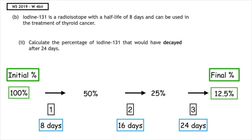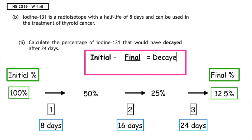However, this is the percentage that's left over. For us to calculate the percentage that decayed, we would do 100 minus 12.5, which would give us a percentage of 87.5%, which must have decayed.